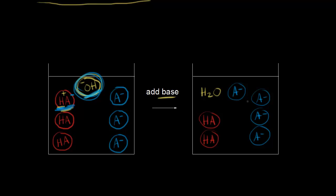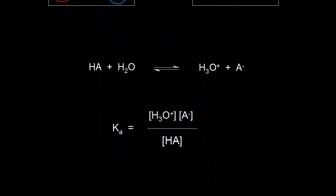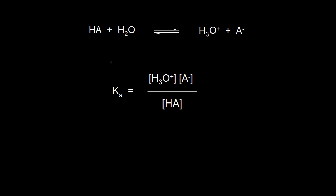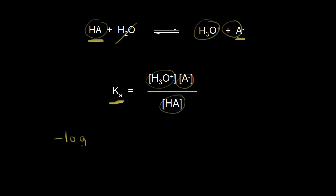That's the idea of a buffer solution. Let's see if we can derive an equation that will allow us to do some calculations. In a buffer, we have substantial amounts of HA and A minus present, and we have this reaction at equilibrium. For our equilibrium expression, concentration of products over concentration of reactants — leaving water out. Let's take the negative log of both sides. So we're going to take the negative log of Ka, and the negative log of all of this, putting the concentration of hydronium ions out front, and then the concentration of A minus over concentration of HA.